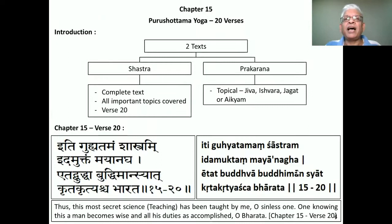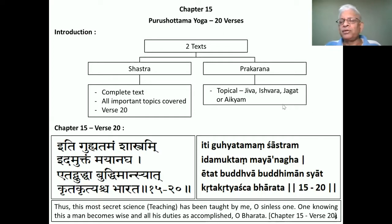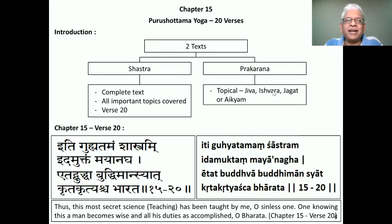With this introduction to chapter 15, let us now go to the text proper. Purushottama Yoga is basically a Shastra — a complete science dealing with all important topics: Jeeva, Jagat, and Ishwara — how to see all three in one. That is this 15th chapter. In the last verse, the 20th verse, the Lord himself says he has taught the most secret science — the science of the self, the science of knowing I am the pure consciousness.